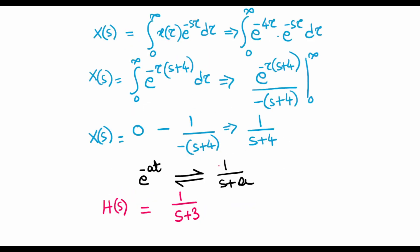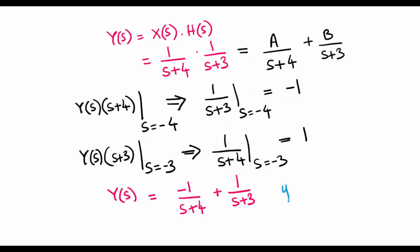Now I will use the same Laplace transform pair to go back from the frequency domain to the time domain. y(t) equals the inverse Laplace transform of Y(s). For the first term this gives −e^{−4t} and for the second term +e^{−3t}. So y(t) = −e^{-4t} + e^{-3t} is the response of the total system found using Laplace transforms and transfer functions. I hope you liked today's lecture — stay tuned to my channel and I will see you again in another lecture. Bye.